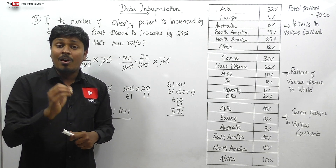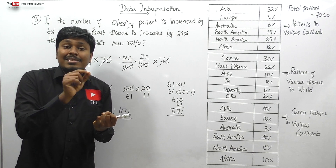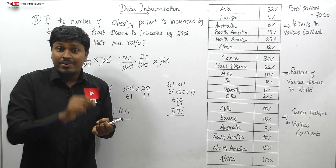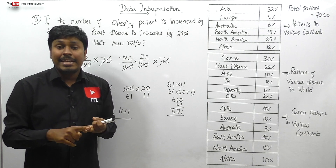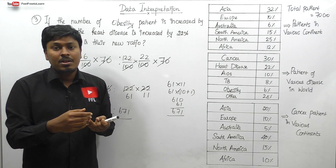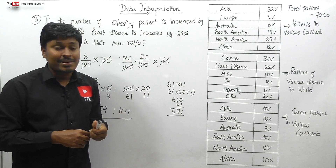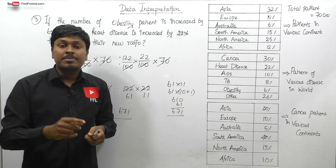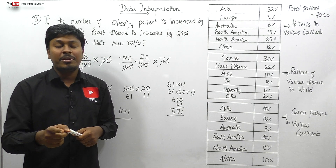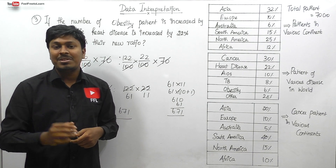In summary, from this DI set we learned three important concepts: first, distinguishing between values like 7.04 crore (7 crore 4 lakh) and 7.40 crore (7 crore 40 lakh); second, using compound interest formulas for population after and population ago; third, handling 'increased by' and 'decreased by' percentage changes. Subscribe to the channel for more quantitative aptitude and reasoning videos. Thank you for watching.